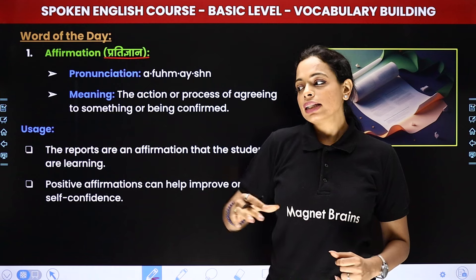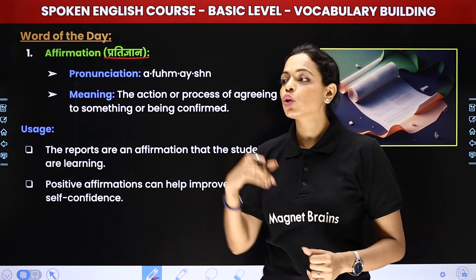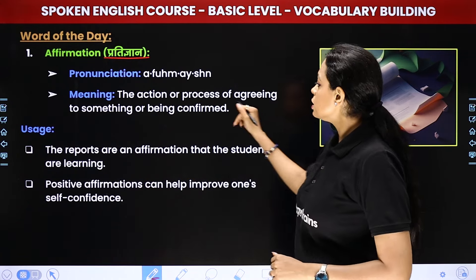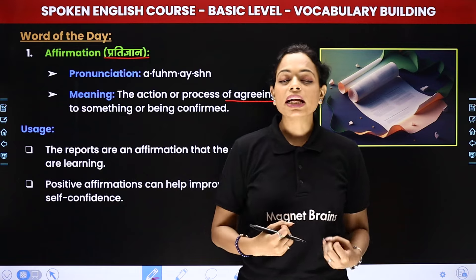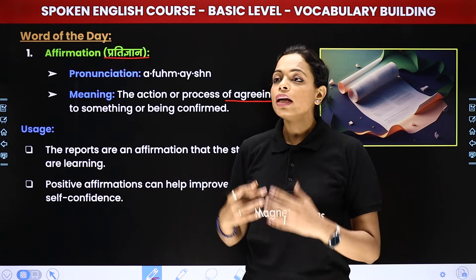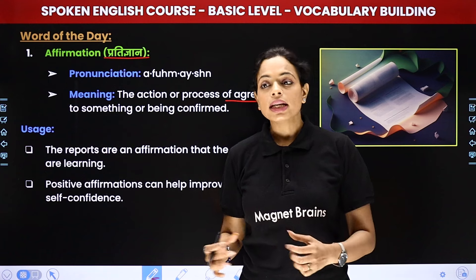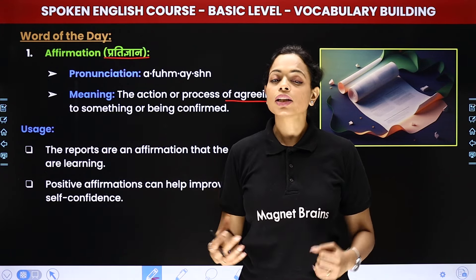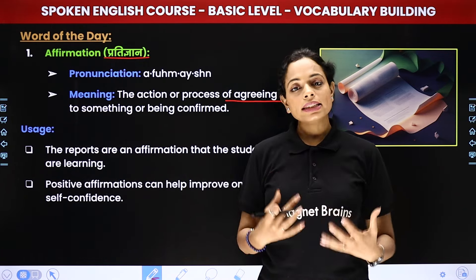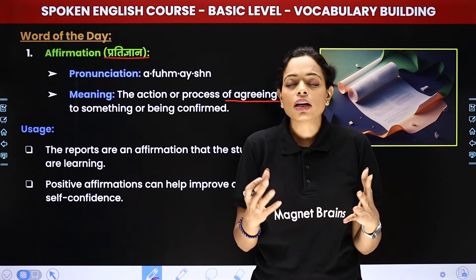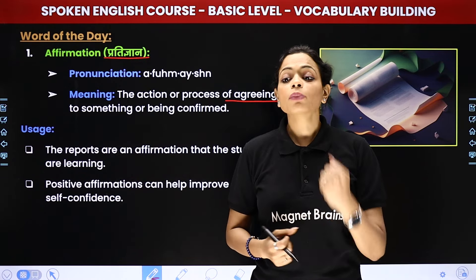Jab main bolti hoon ki yaad kya ye kaam main kar sakti hoon? Toh maine kya bola — I affirm this. Matlab main is chiz ko haan bol rahi hoon. Toh jab aap kisi bhi chiz mein agree kar rahe hoon, isko affirmations kehte hai. Also affirmation ka ek aur matlab hota hai — jiasse ki main apni life mein kuch chahti hoon toh main apne liye affirmations likhti hoon. For example, 'I am extremely strong and content in my life,' 'I have a healthy body.' Yeh sab positive sentences jo main apne liye likh rahi hoon, isse affirmations kehte hai. Main agree kar rahi hoon un sentences se. Jab hum aise sentences apne liye likhte hai, toh pura jo universe hota hai na, woh humko un chizo ko dene ke liye bohat zyada effort lene lag jata hai, kyunki hum un chizo pe yaqeen kar rahe hai.